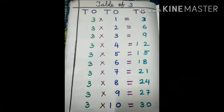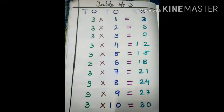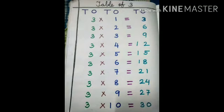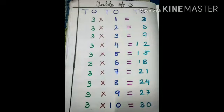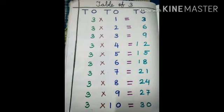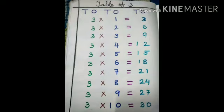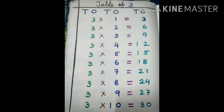So once more. 3 1s are 3. 3 2s are 6. 3 3s are 9. 3 4s are 12. 3 5s are 15. 3 6s are 18. 3 7s are 21. 3 8s are 24. 3 9s are 27. 3 10s are 30.